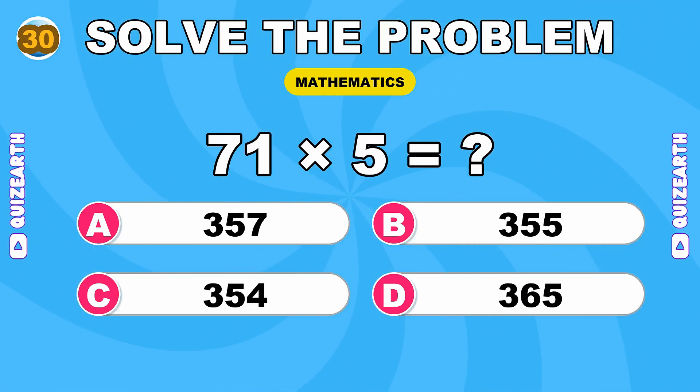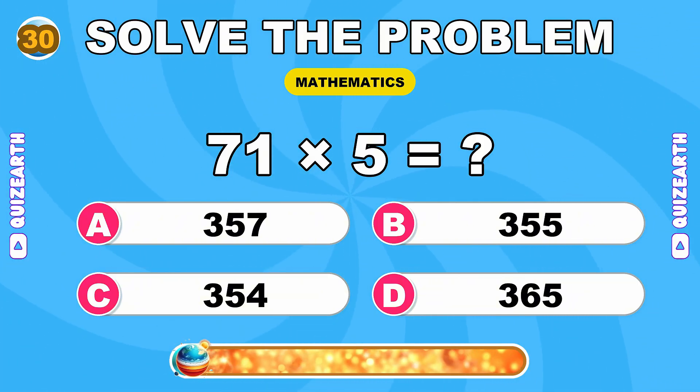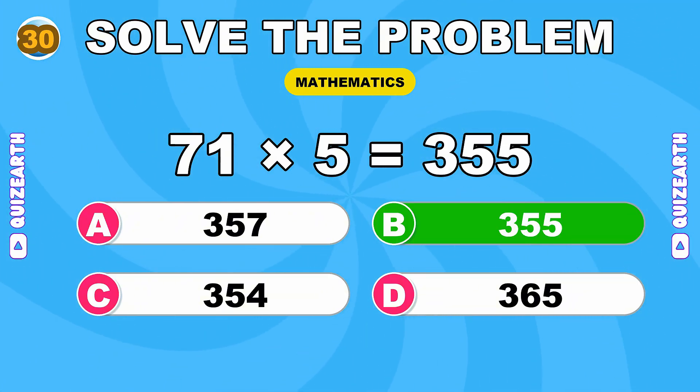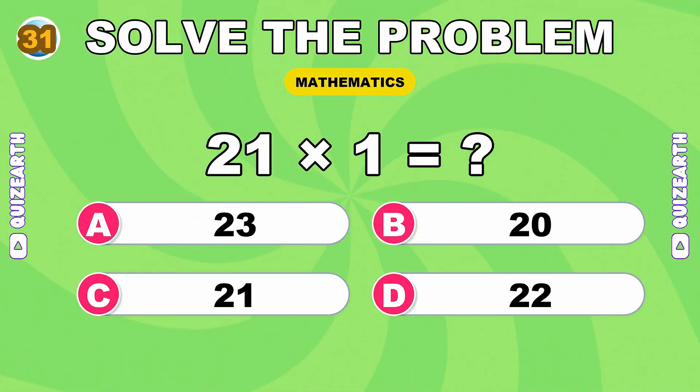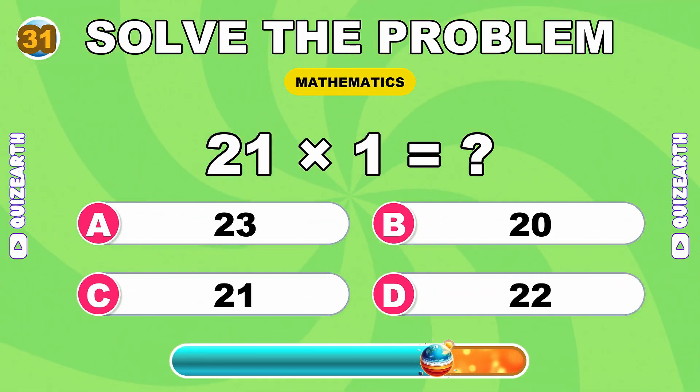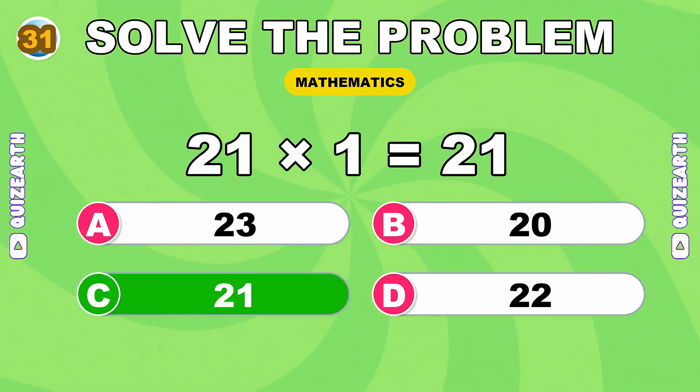What do you get when you multiply 71 by 5? Spectacular, 355. What is 21 times 1? You're unstoppable, 21.